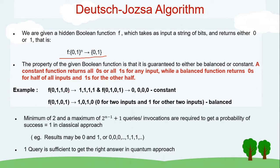To understand with an example: suppose we give the input 0,1,1,0 to the function. If it returns all ones or all zeros, it's called a constant function. If it returns two zeros and two ones, it's a balanced function. Our job is to find out whether the given hidden boolean function is constant or balanced. In the conventional way, we give the string, look at the result, and decide — but how many times do we have to query the function?